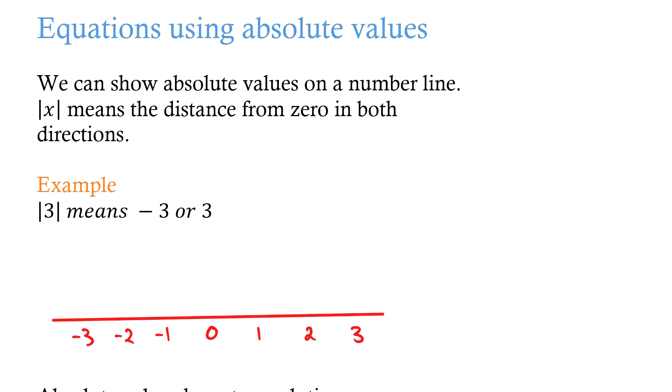Where the gates, as we call it, so if we have an x here, these two lines we call the gates. The gate x means the distance from zero in both directions.